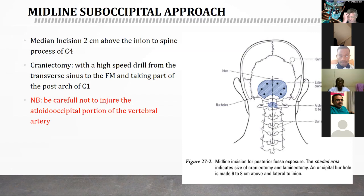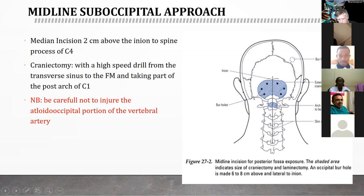The midline suboccipital approach provides a larger view of the posterior fossa up to the craniovertebral junction. A median incision is made two centimeters above the inion to the spinous process of C4. The craniotomy is performed with a high-speed drill from below the transverse sinuses to the foramen magnum, also removing part of the posterior arch of C1. Care must be taken not to injure the V3 segment of the vertebral artery, which enters just laterally.